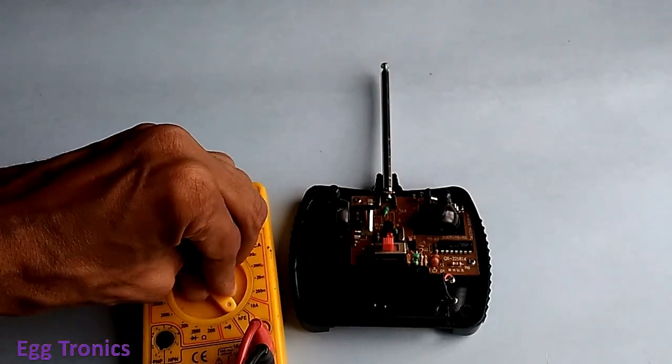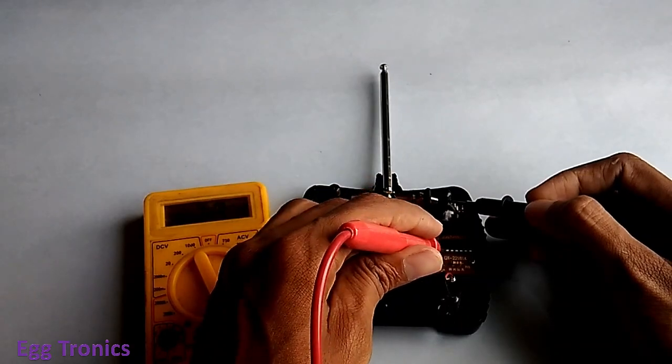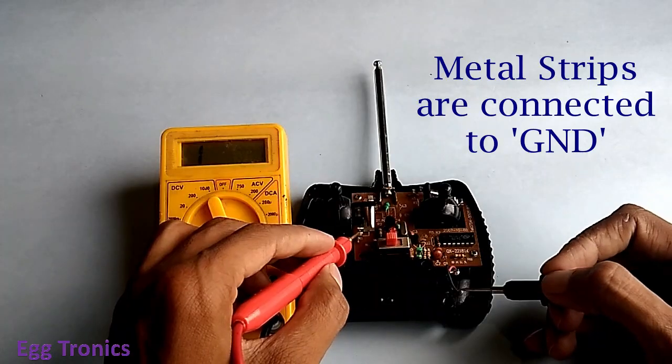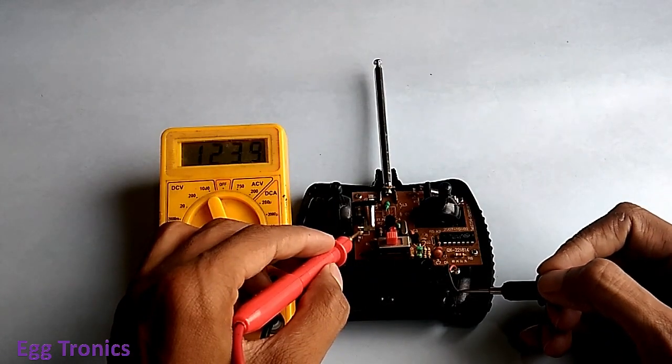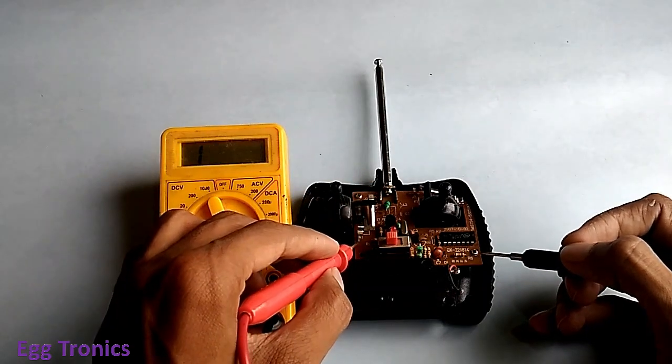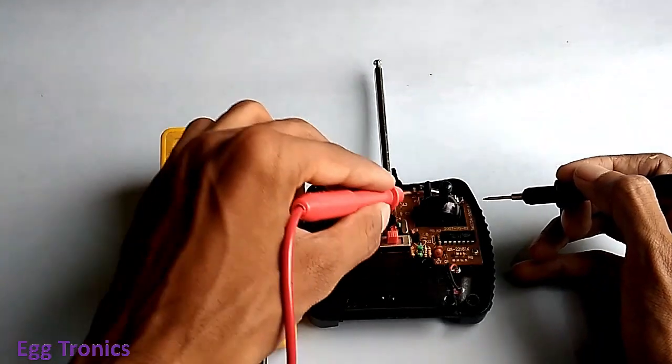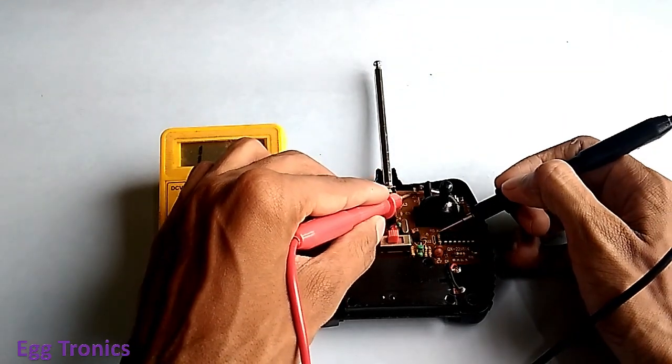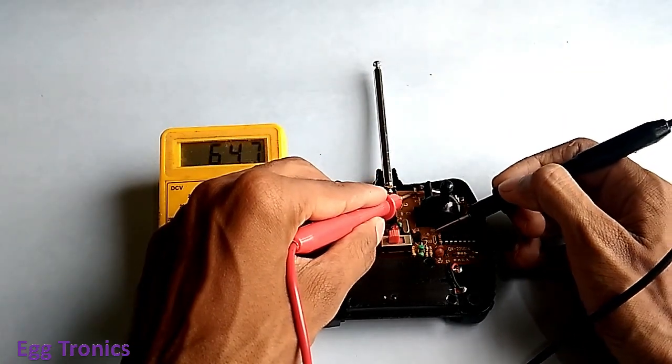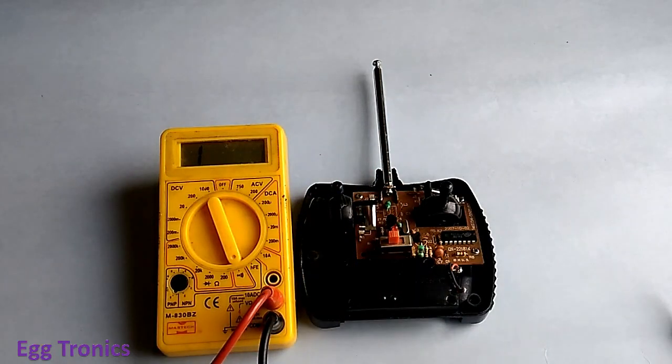Putting my multimeter into continuity mode and checking the connections, I found that these metal strips are connected to ground. And pins on the board below the metal strip connect to the respective forward, backward, left and right pins of the IC. I also noticed the turbo pin was not used.